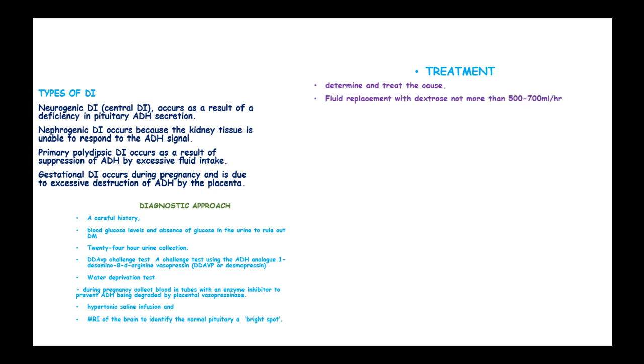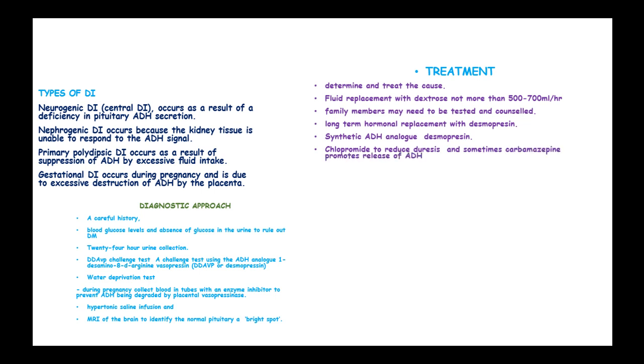With dextrose, not more than 500 to 700 milliliters per hour. Family members may need to be tested and counseled. In this case you have to manage with long-term hormonal replacement with desmopressin, which is a synthetic ADH analog, and chlorpropamide to reduce diuresis, and sometimes carbamazepine which promotes the release of antidiuretic hormone.